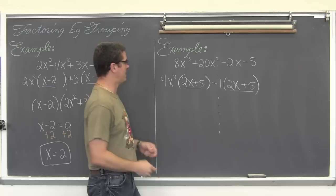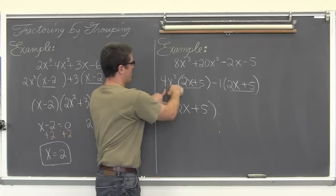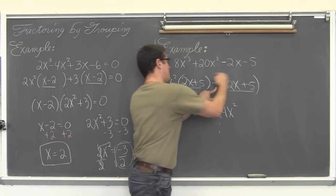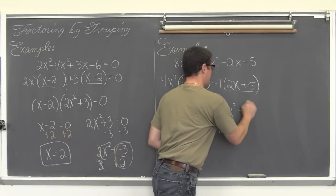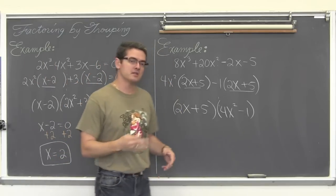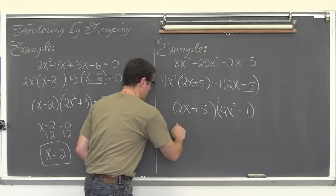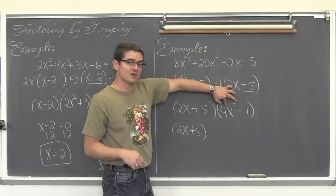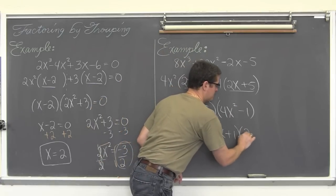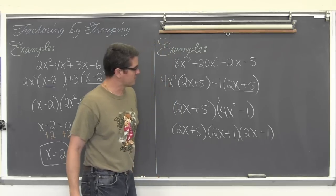These two terms both have a common factor of 2x plus 5, so we are going to factor that out. 4x squared times 2x plus 5, divided by 2x plus 5, is going to be 4x squared. And negative 1 times 2x plus 5, divided by 2x plus 5, is negative 1. Now we are not done factoring this — you probably recently learned how to factor a difference of two perfect squares. So we have 2x plus 5 times the quantity: the square root of 4x squared is 2x, and the square root of 1 is 1. So we have 2x plus 1 times 2x minus 1. That is our example finished — a bit of factoring by grouping and a review of factoring a difference of squares.